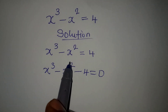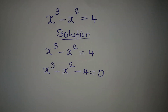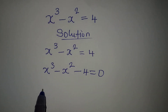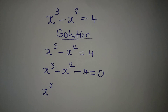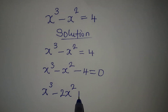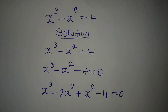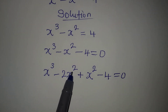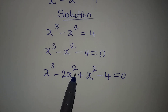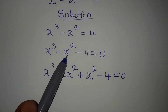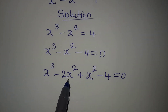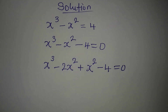The next thing we are going to do is to break x squared into 2 so that we can factorize. Doing that, we are going to have x to the power of 3 minus 2x to the power of 2 plus x to the power of 2 minus 4 equal to 0, because negative 2x squared plus x squared gives us minus x squared — so this is still the same thing.